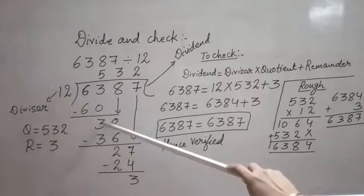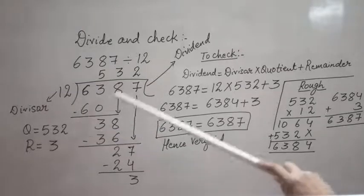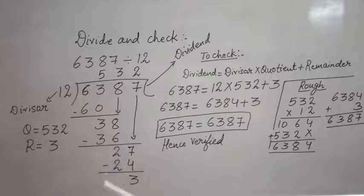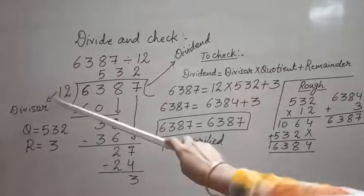My number is 27. Again I need to see how many times 12 goes into 27. We know 12 twos are 24, 12 threes are 36. Again, 36 is bigger than 27, so I will be going with 12 twos are 24.